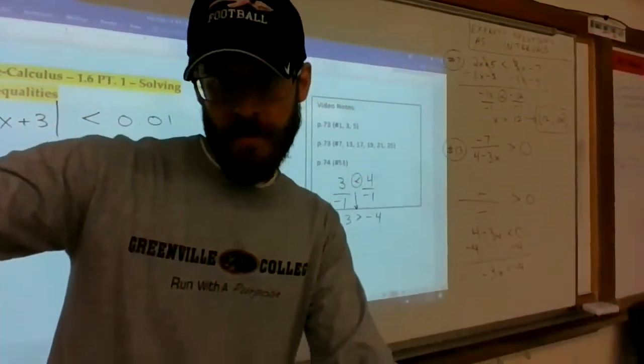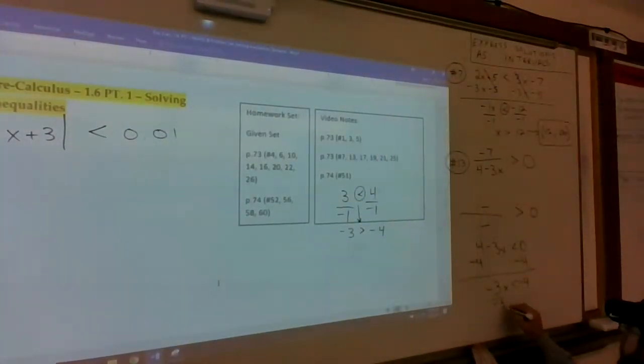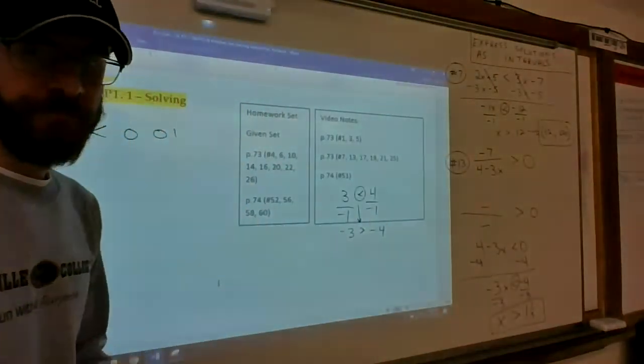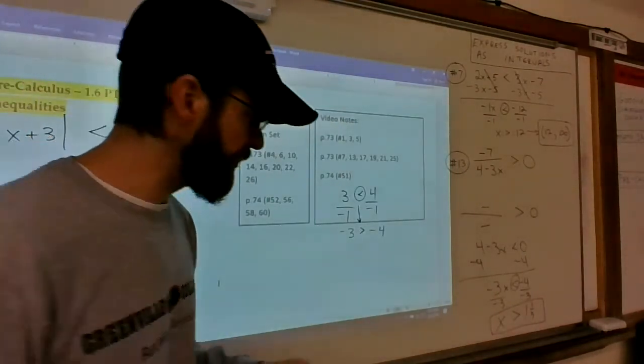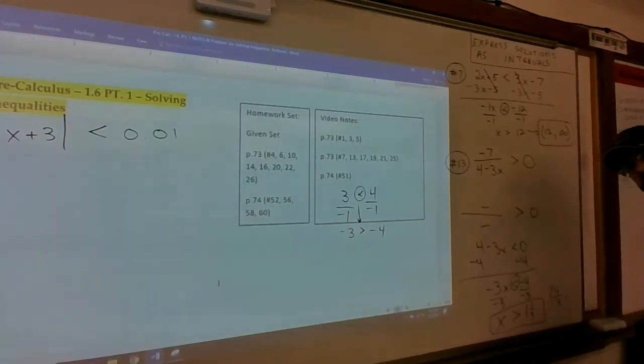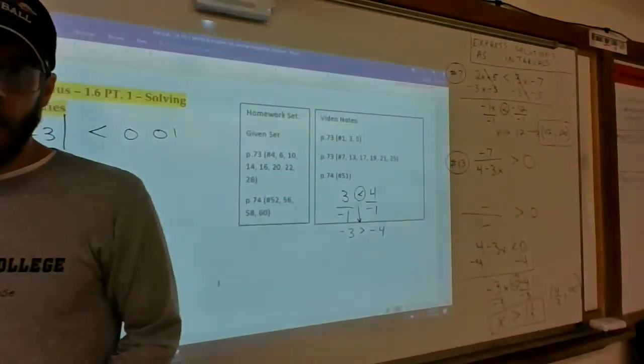Divided by a negative, flip that, x is greater than 1 and 1/3, which would be parenthesis 1 and 1/3 or parenthesis 4/3. You can keep them as improper fractions to infinity.